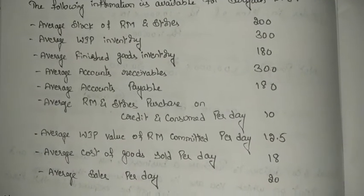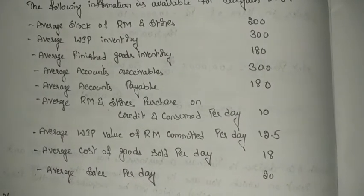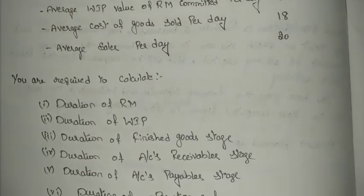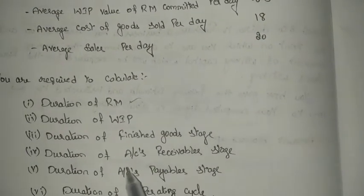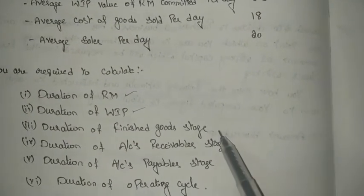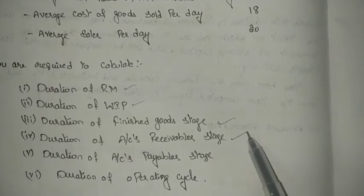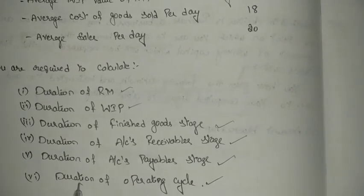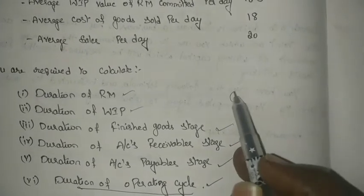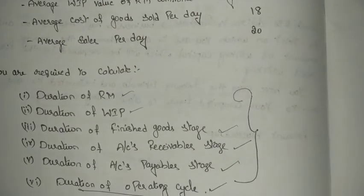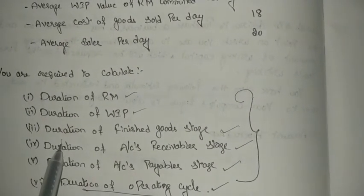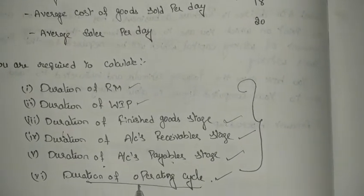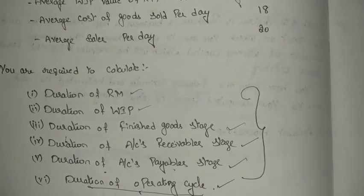With this information, they are asking you to calculate the duration of raw materials, duration of work in progress, duration of finished goods, duration of accounts receivables, duration of accounts payable, and the duration of operating cycle. To get the duration of operating cycle, you should first calculate all these individual durations. Then, the sum of all these durations minus accounts payable duration gives the duration of the operating cycle. Let us calculate them one by one.